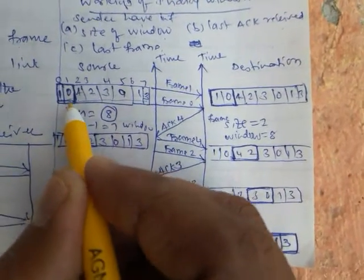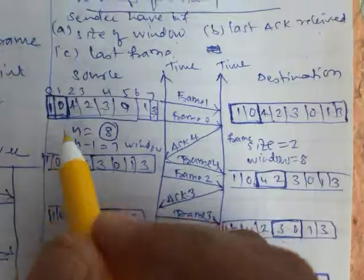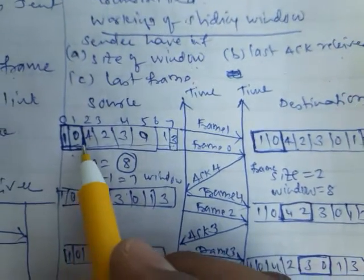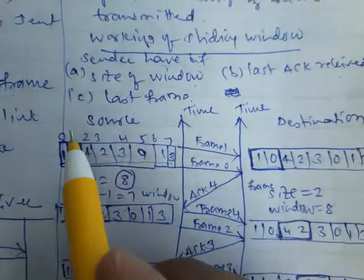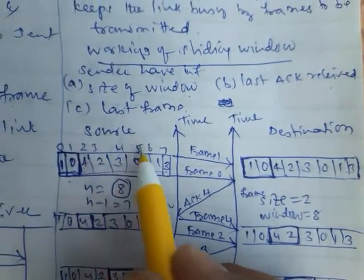So these are the given data frames: 1, 0, 4, 2, 3, 0, 1, 3. These are the data frames you are sending. The data 0, 1, 2, 3, 4, 5, 6, 7 are the frame sequences.